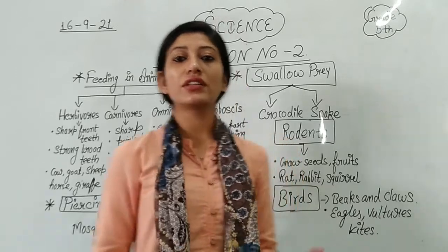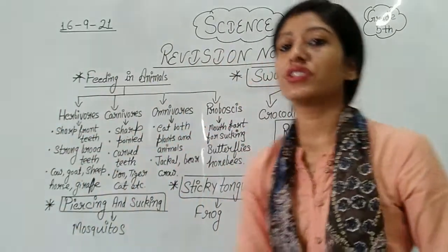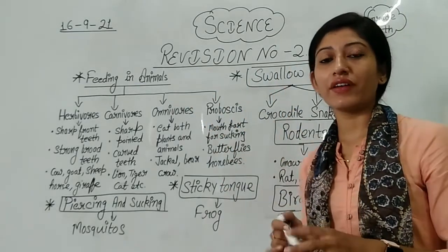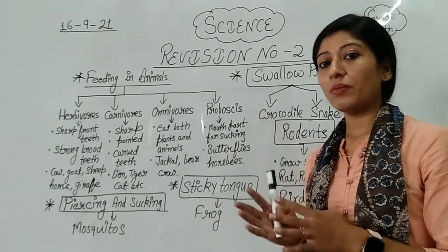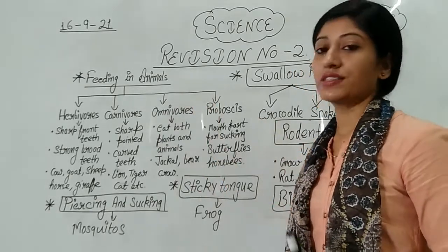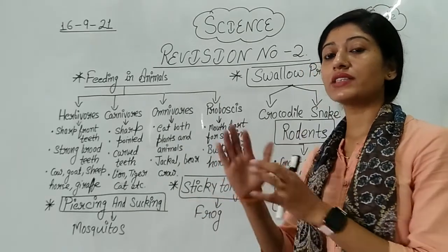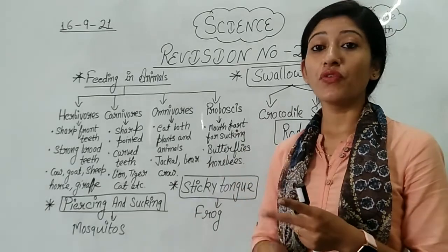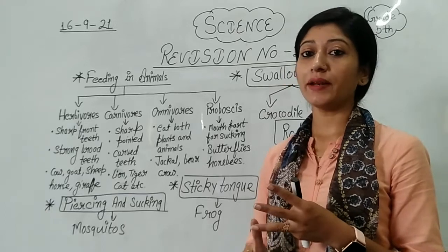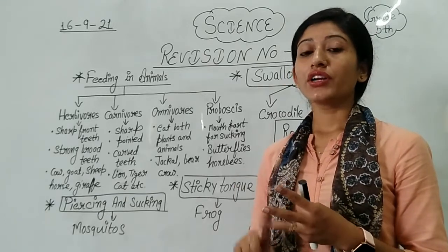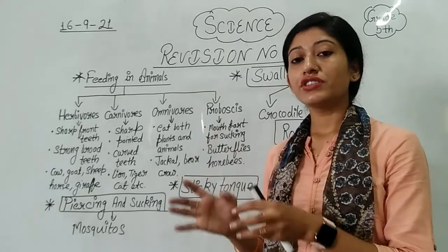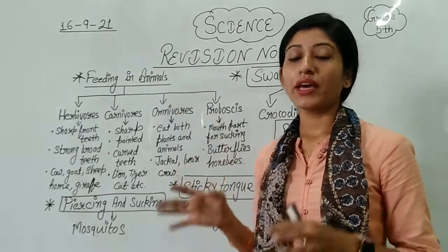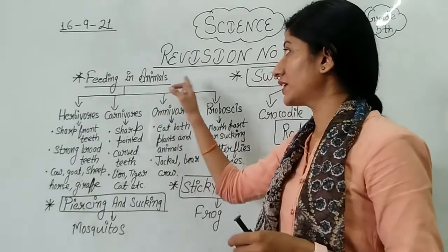Here I have written revision number 2, which is related to chapter number 2: Varying Lifestyles of Animals. In this chapter, topics are divided according to feeding habits, according to movements done by animals, and according to the way they migrate. In today's class we are going to cover the feeding in animals topic.